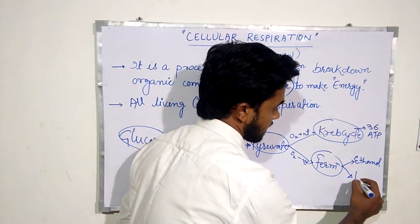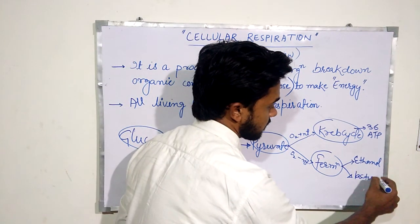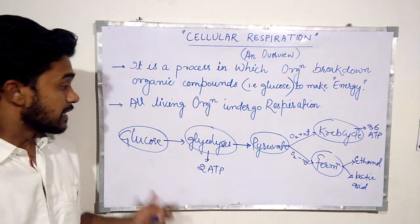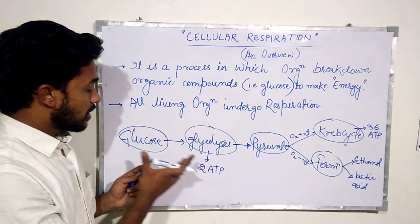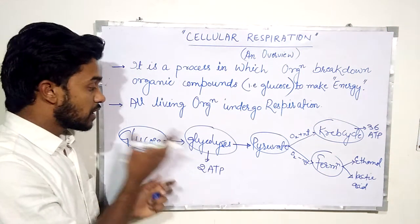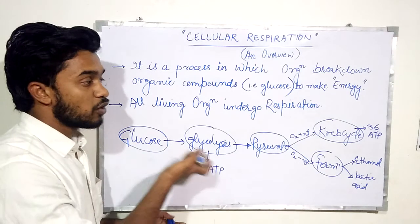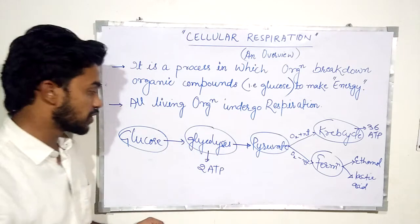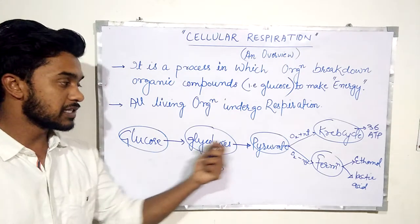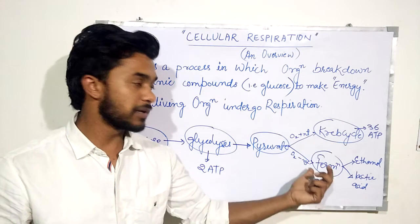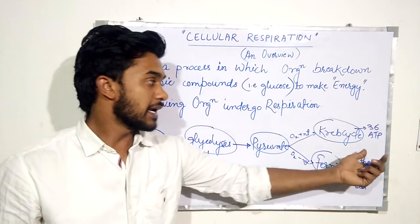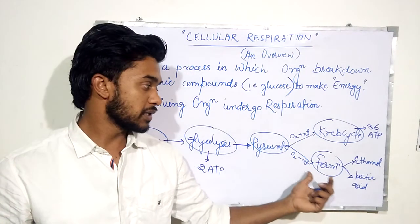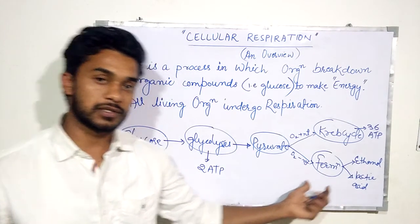So this is the overview of cellular respiration — the pathway starts with glycolysis, produces pyruvate, then goes to the Krebs cycle with a net gain of 36 ATP, or in the absence of oxygen it undergoes different kinds of fermentation producing ethanol or lactate.